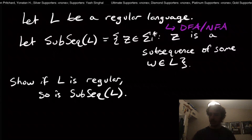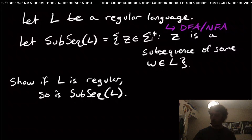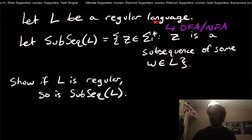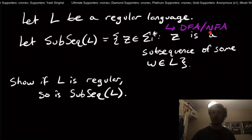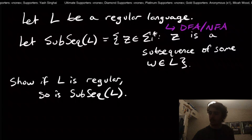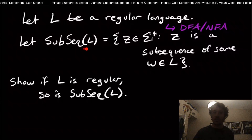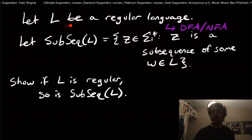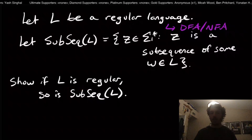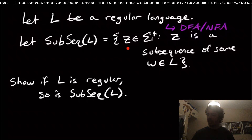Hi and welcome back to another edition of Easy Theory. Today we're going to continue from where we left off and look at this fun problem. We have a regular language, which we know corresponds to a DFA or an NFA, and we know NFAs and DFAs are equivalent to each other. We're going to look at a language parameterized on L — the subsequences of L — which will differ depending on which regular language we provide.